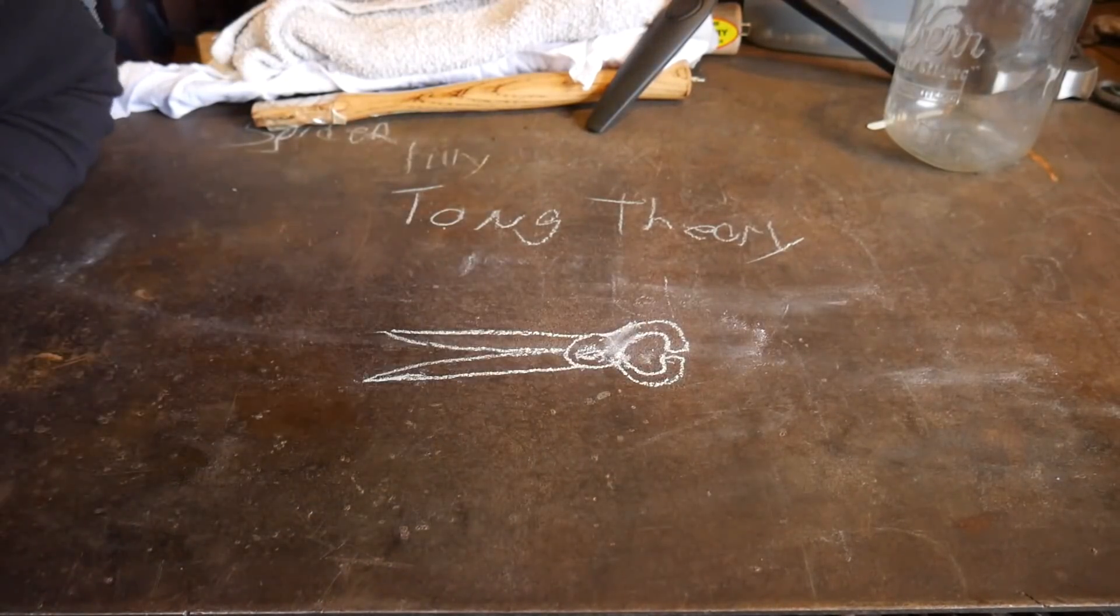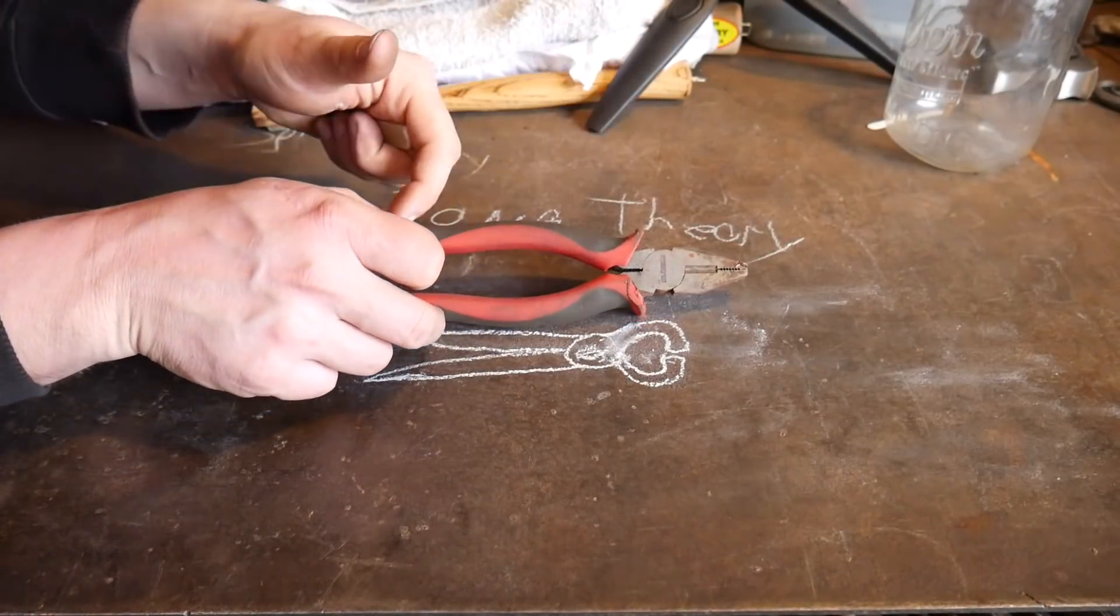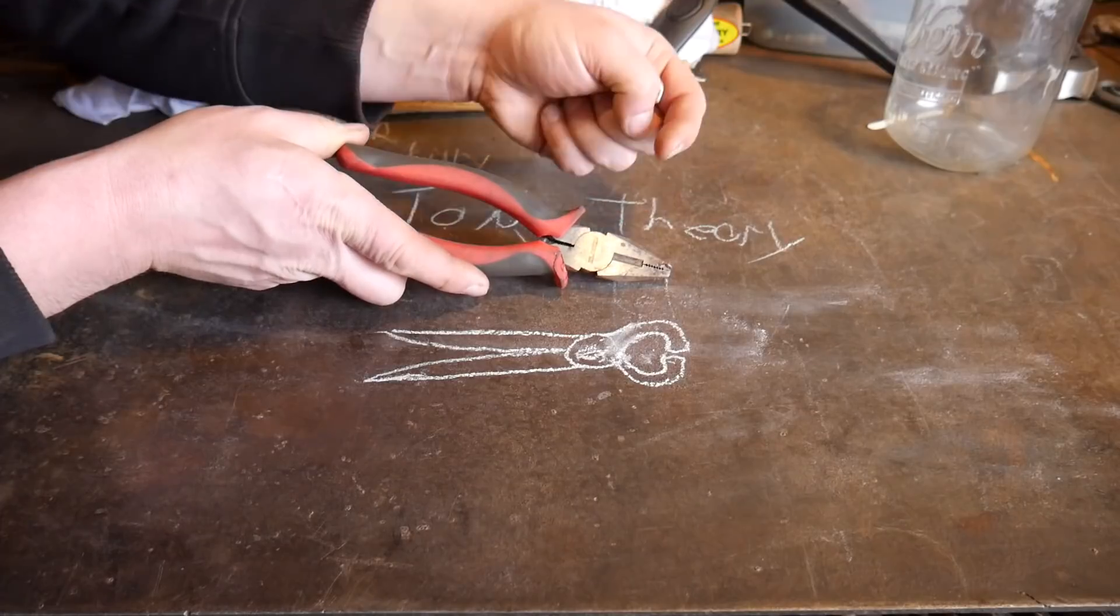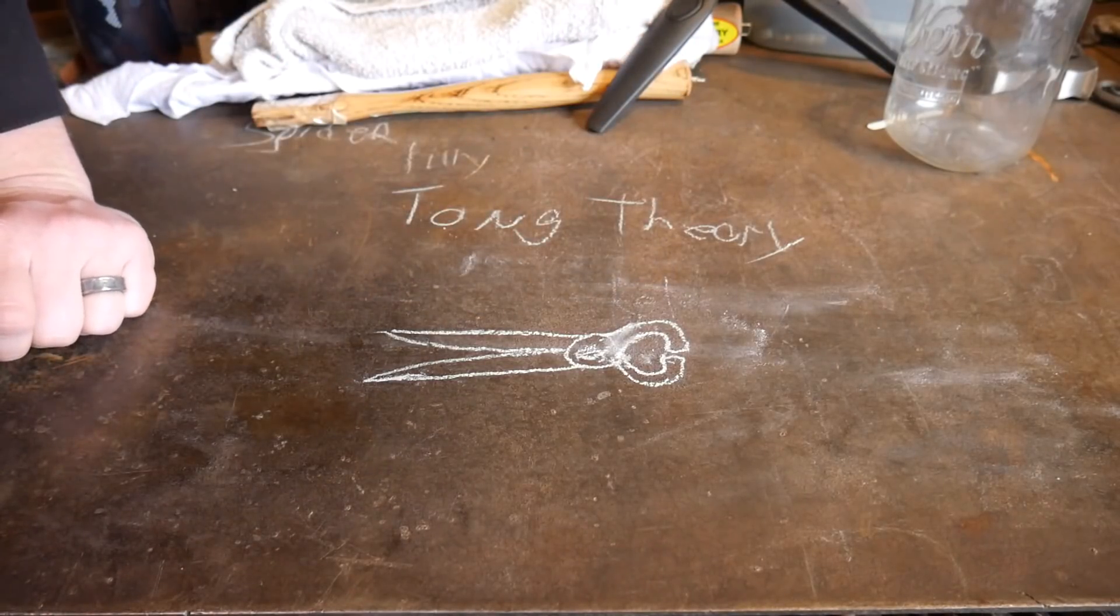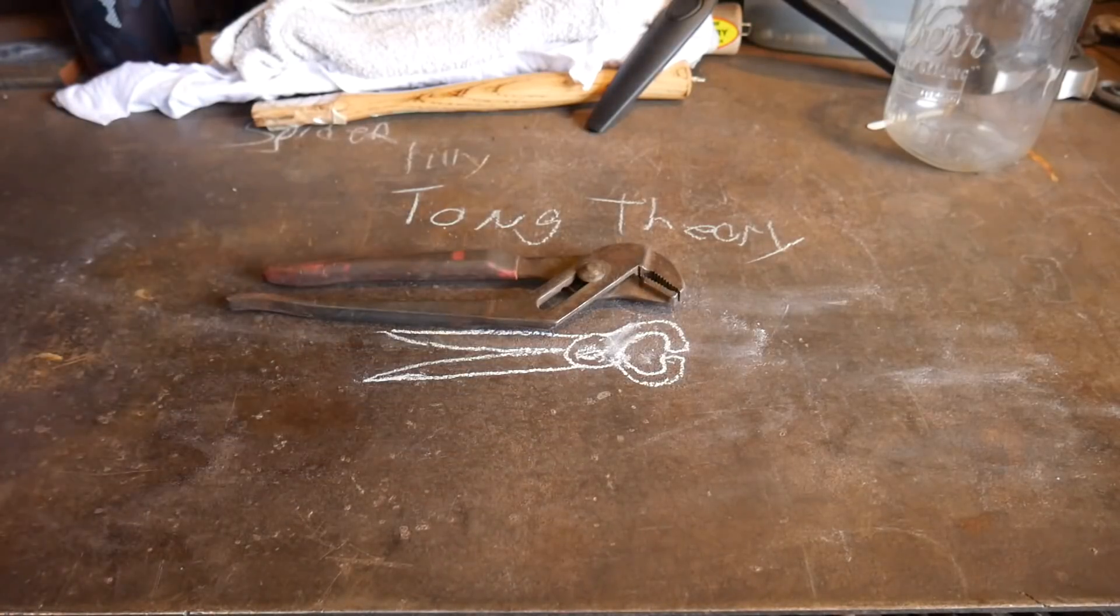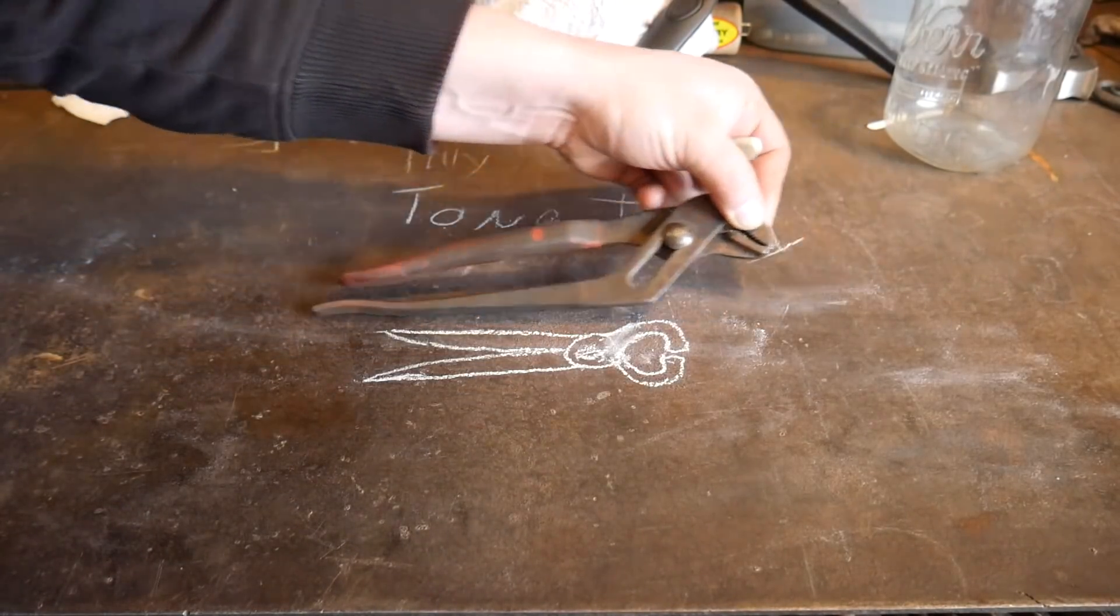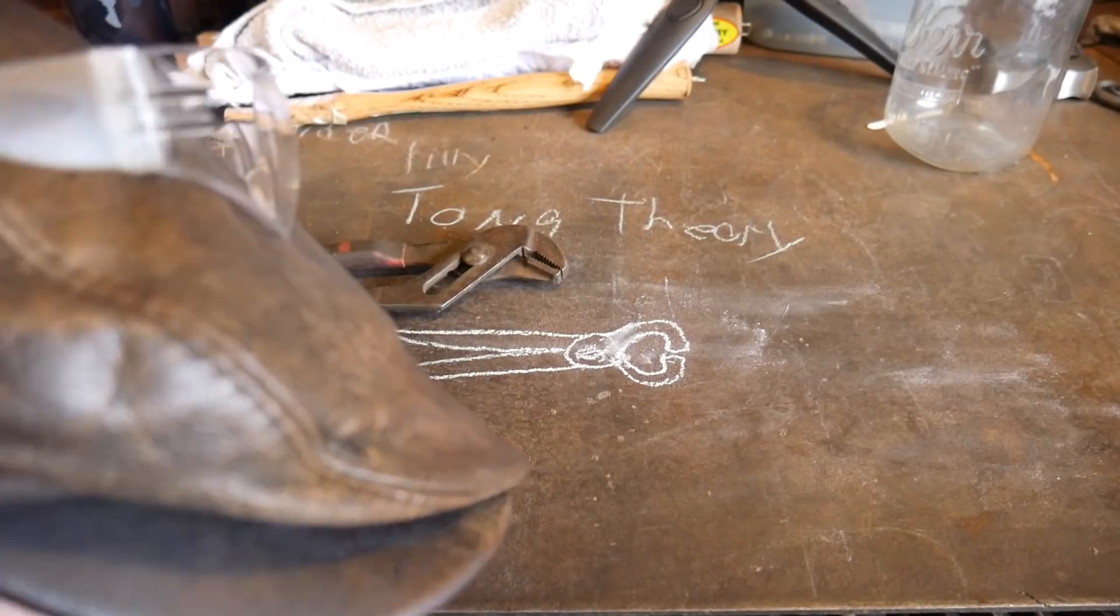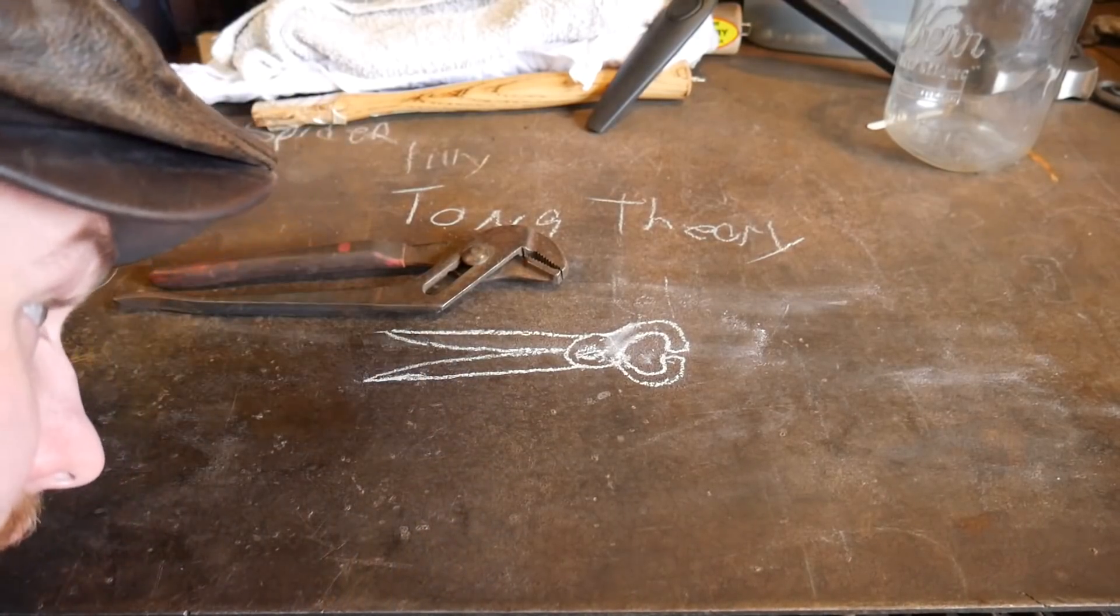We can also find this in things like pliers. There's a longer lever than there is a jaw to apply more clamping pressure and more force here. We can also find this in things like right here, really short jaws, really long levers, in a crescent wrench there. Or not crescent, but an adjustable.